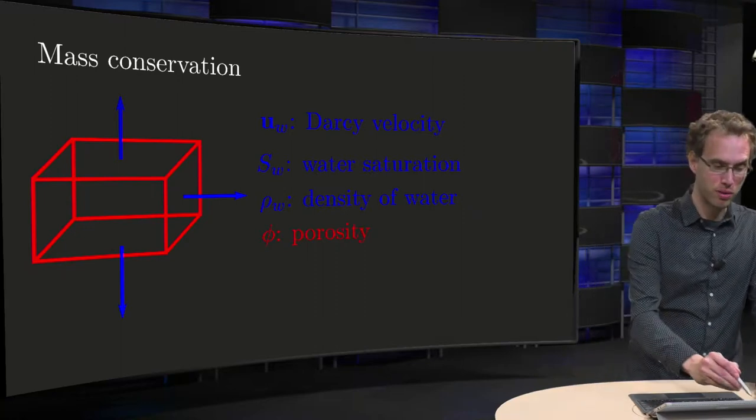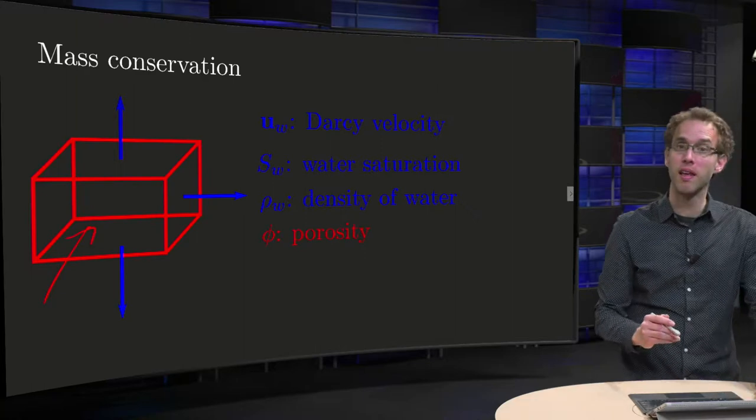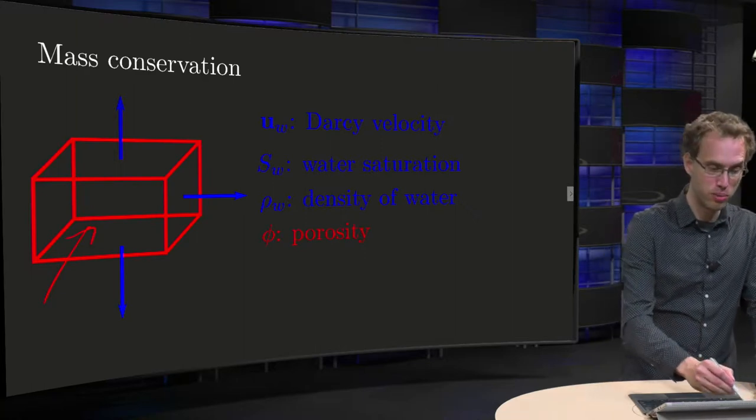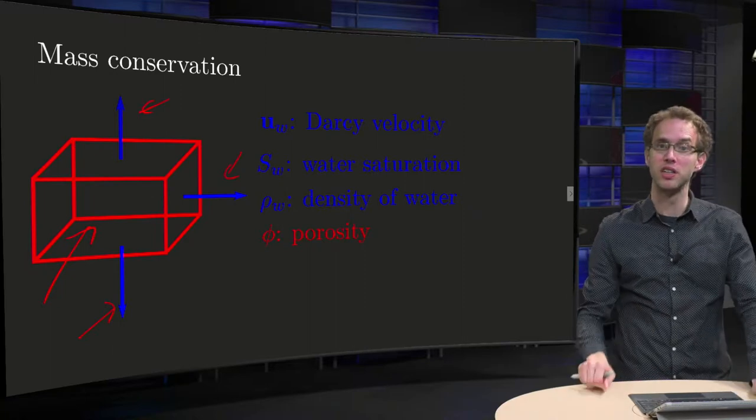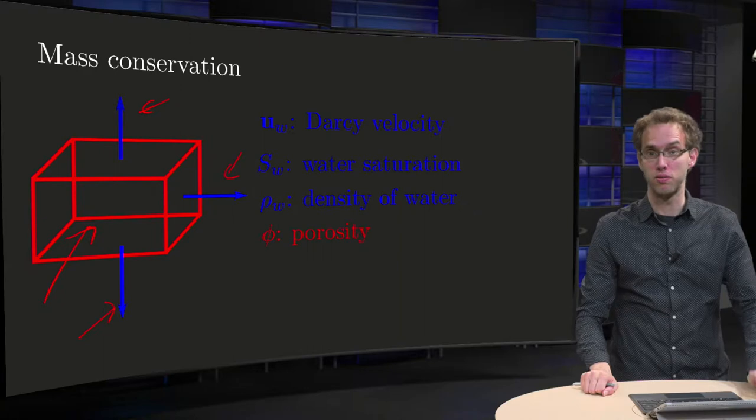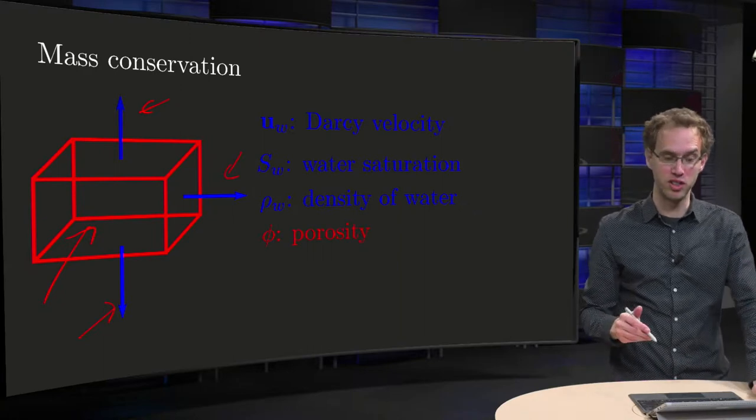So what do we have? We have some region in space V, and some UW Darcy velocity, say flowing through all six boundaries. Fluids, for example water, is flowing out of this region V.